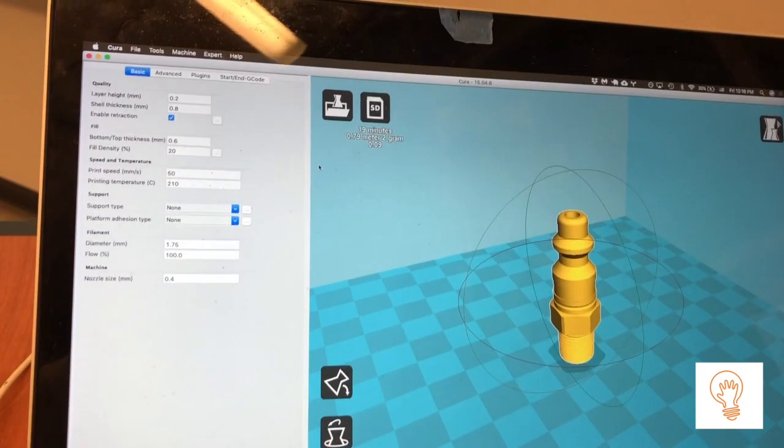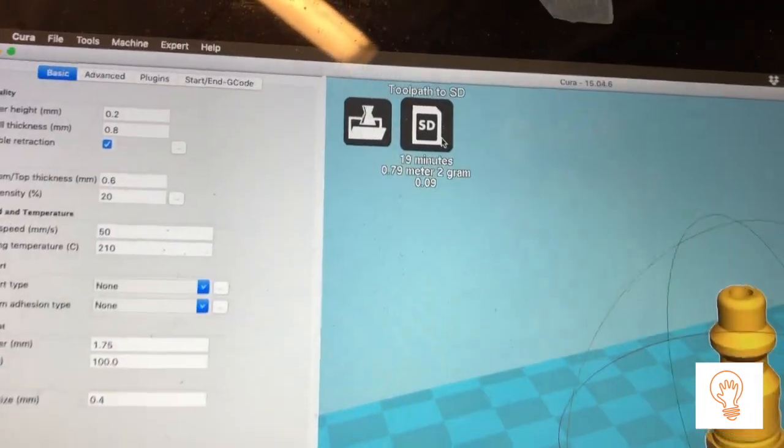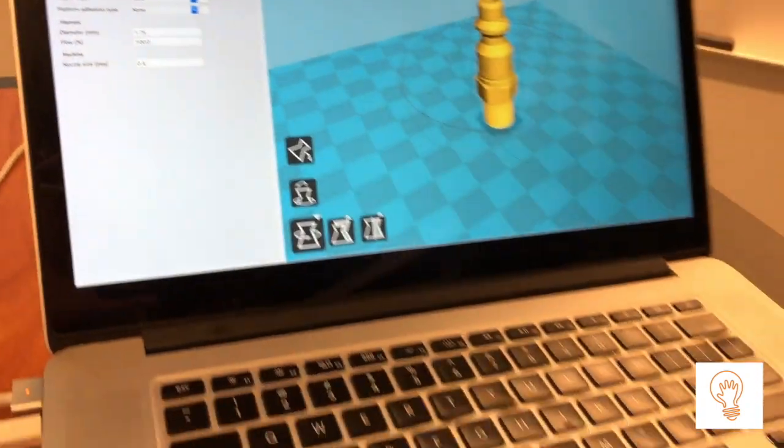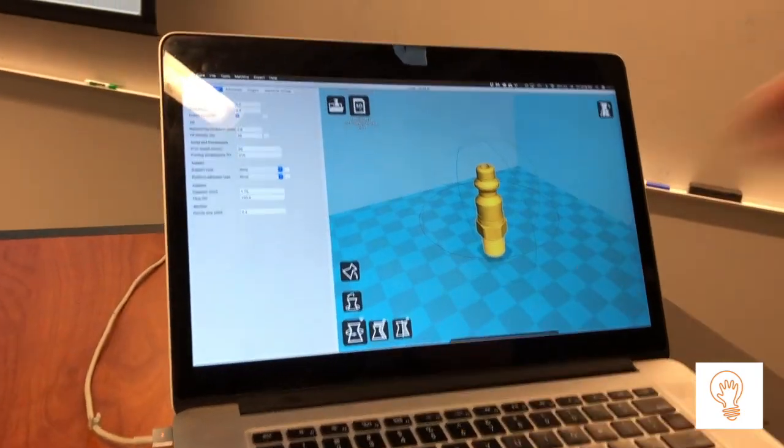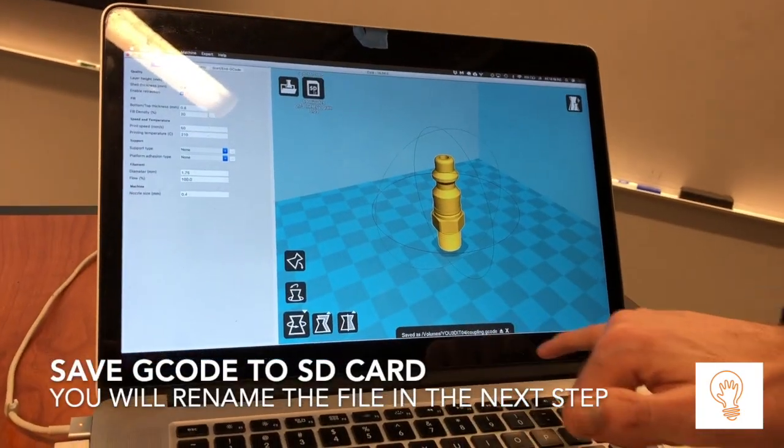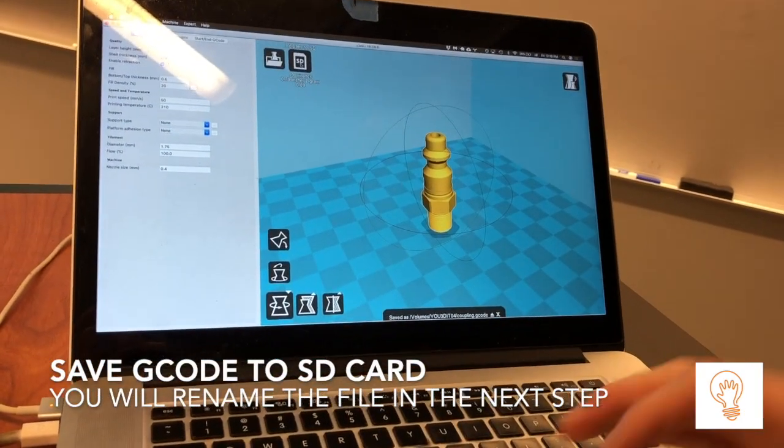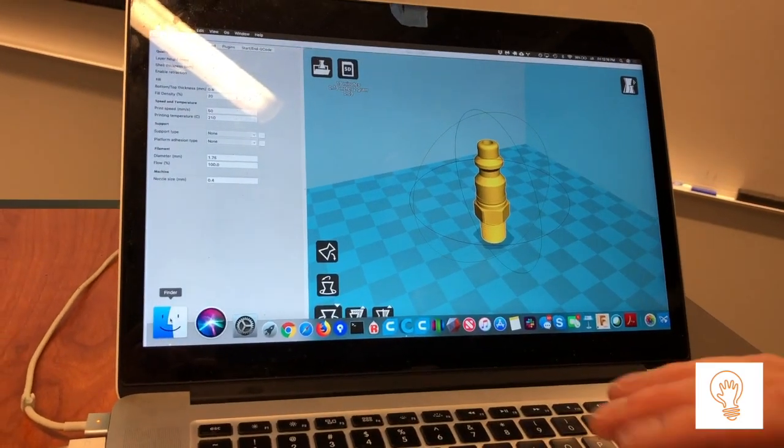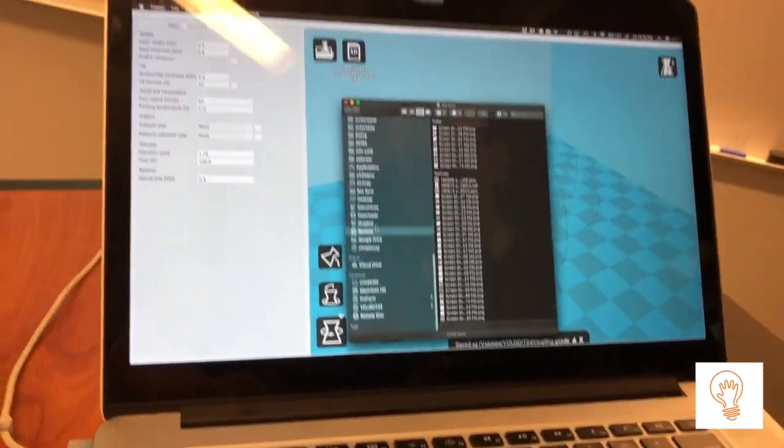You can see it's 19 minutes to 3D print. Because I have the SD card plugged into my Mac, it's recognizing the SD card and I'm going to hit save. I'll call it coupling.gcode.